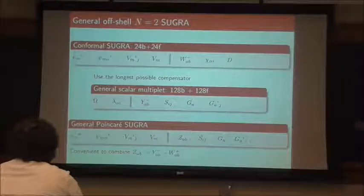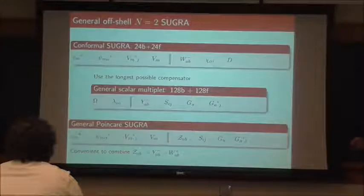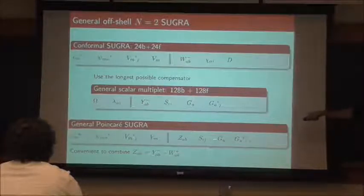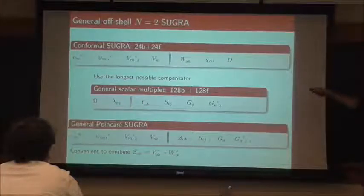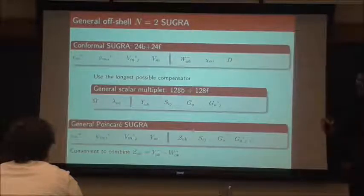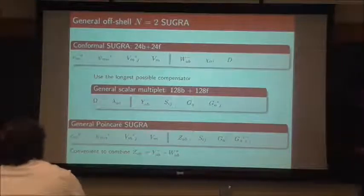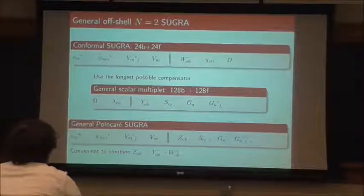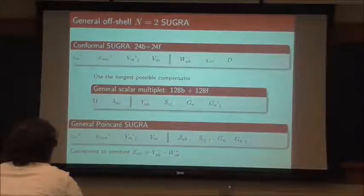When I put everything together, I get a general Poincaré supergravity theory with graviton, gravitino, SU(2) and U(1) gauge fields. It's convenient to group W_{AB}^+ with the complex conjugate of Y and call it Z_{AB}. The reason I'm calling it Z_{AB} is that if I had engineered this Poincaré supergravity theory to have a complex central charge, this Z_{AB} would be the bosonic field strength of that central charge. Hence the name — and also it's a letter reasonably close to Y and W, which is actually how we chose it in the first place. Then we realized it's the central charge field strength.